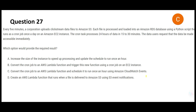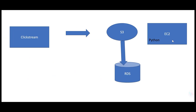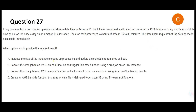I've already marked the answer as D, but let's scan through the options. Option A says increase the size of the EC2 instance and run the schedule once an hour. The Python job runs on EC2, takes data from S3, and puts it in RDS. But increasing the instance size and running once an hour means you still don't get immediacy — you wanted immediate access. So A is wrong.